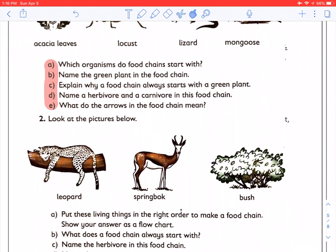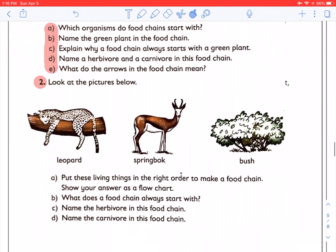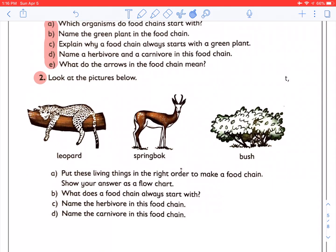Next is question two. Look at the pictures below. You've got a leopard, a springbok, and a bush. Put these living things in the right order to make a food chain. Show your answer as a flow chart. B, what does a food chain always start with? C, name the herbivore in the food chain. And D, name the carnivore in the food chain. So you need to do all four in your notebook.